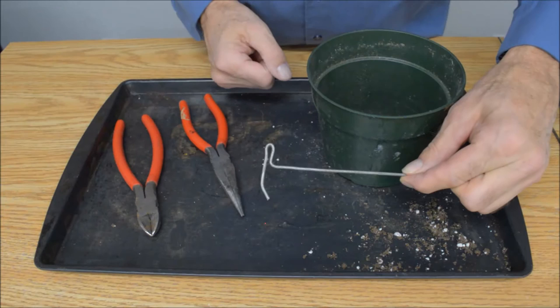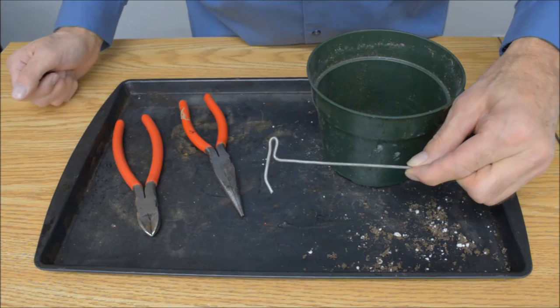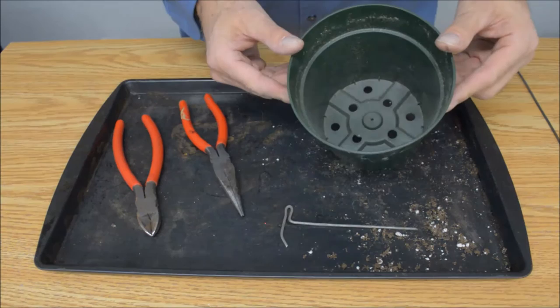It's called a rhizome clip. Now you can buy these at specialty orchid shops, but it's just as easy to make one yourself. Let's go ahead and make one.